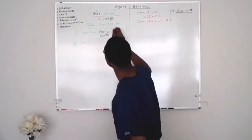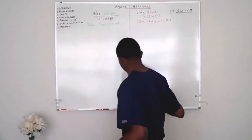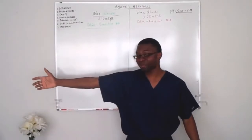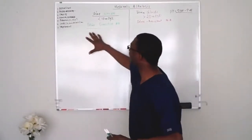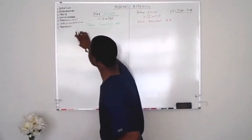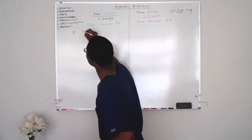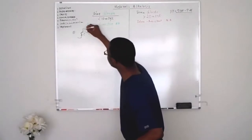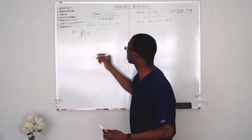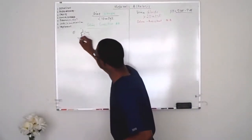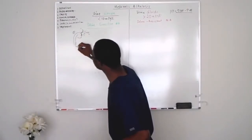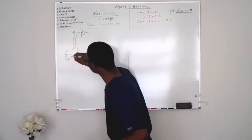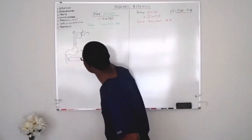Now let's go over the pathophysiology, because that's where everything is going to make some sense. The patient is going to vomit. What's inside the stomach? There's the mouth, esophagus, stomach, duodenum, and a little bit of the pancreas. Inside the stomach is a lot of hydrochloric acid — the pH of the stomach is 2.